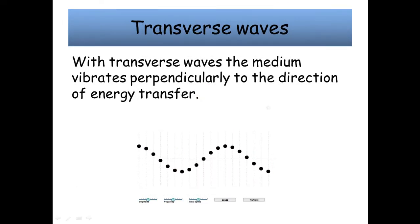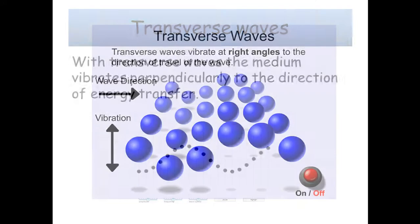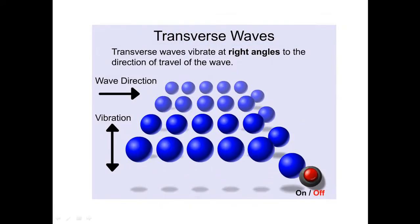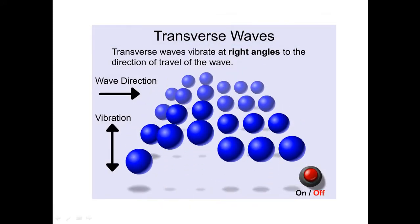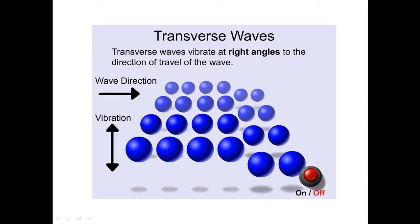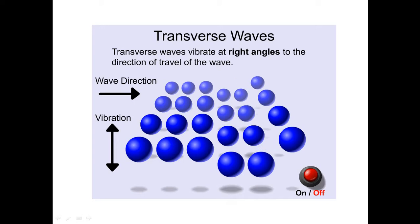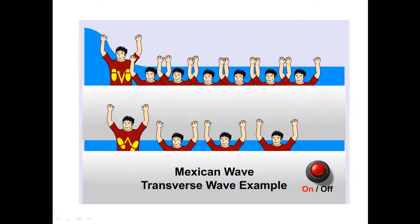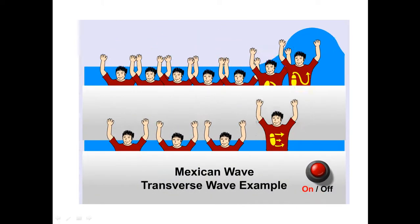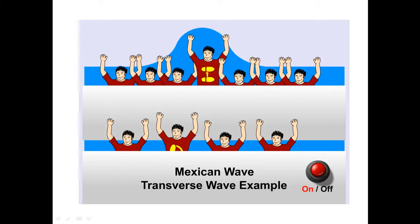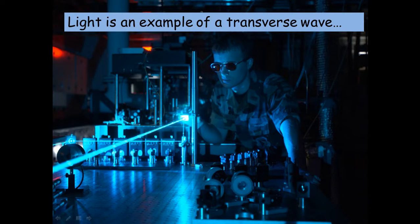Transverse waves. With transverse waves, the medium vibrates perpendicularly to the direction of energy transfer. And here's another example. So transverse waves vibrate at right angles to the direction of travel of the wave. And a Mexican wave is a nice example. Light is an example of a transverse wave.